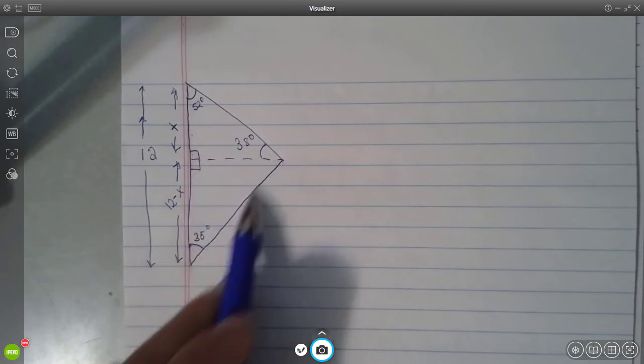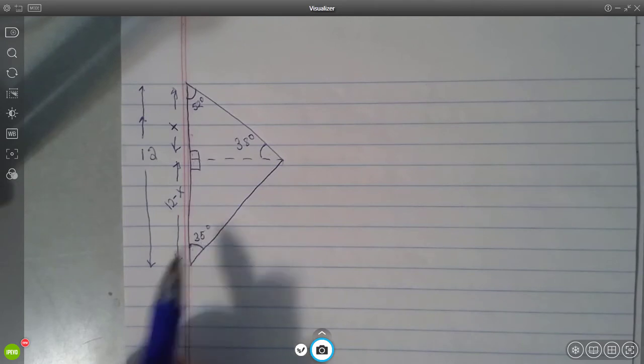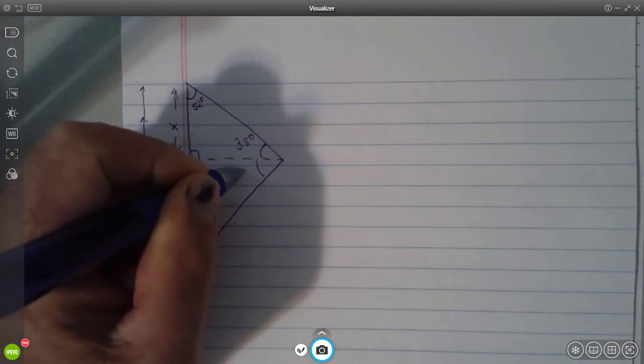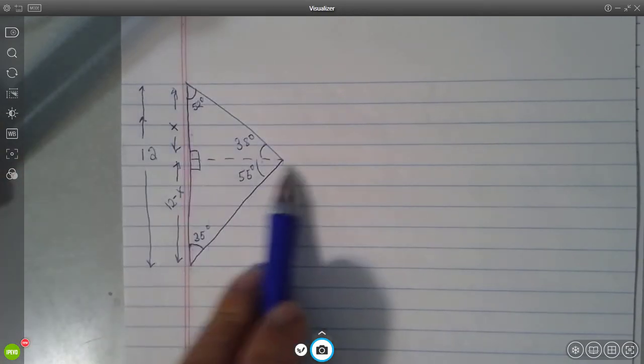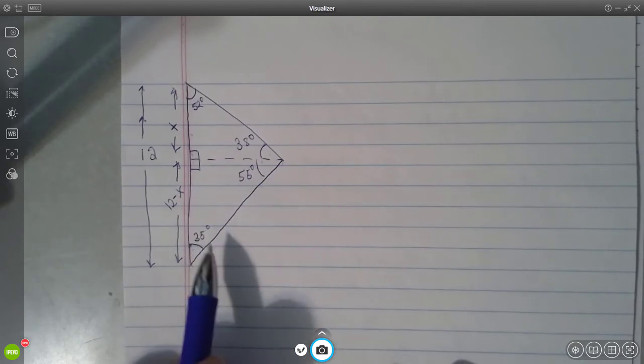And in this triangle, if we've already used up 35, then this one must be 55. So we know all of the angles now, and all we need to do is compute some sides.